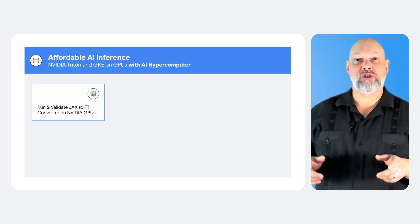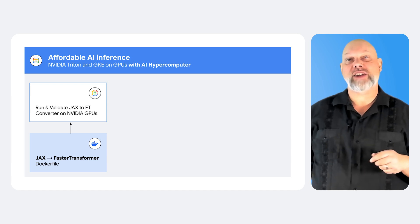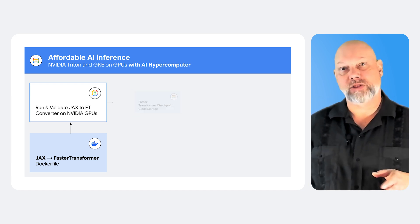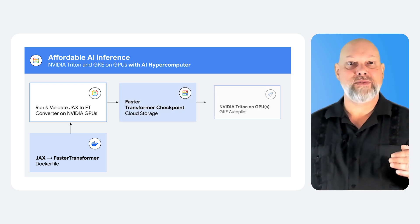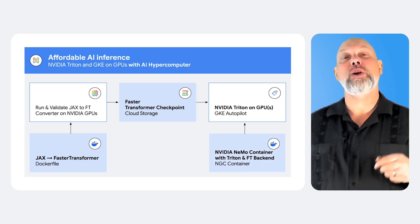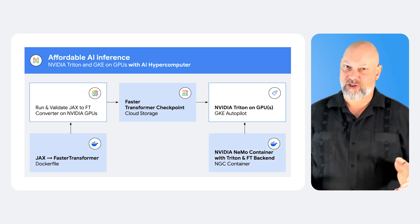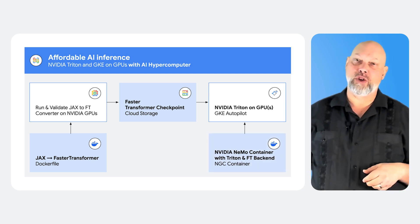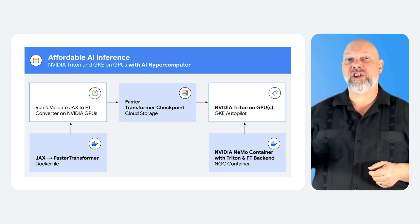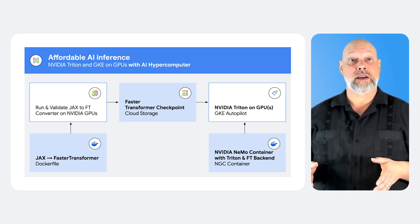Now let's put that into practice. This architecture uses JAX for training, then converts models to NVIDIA's Faster Transformer format for inference. Optimized models are served via NVIDIA Triton on GKE Autopilot, and a pre-built NEMO container simplifies setup. This combination is awesome for a few reasons — cost efficiency: all that GKE and consumption model goodness is baked right in.